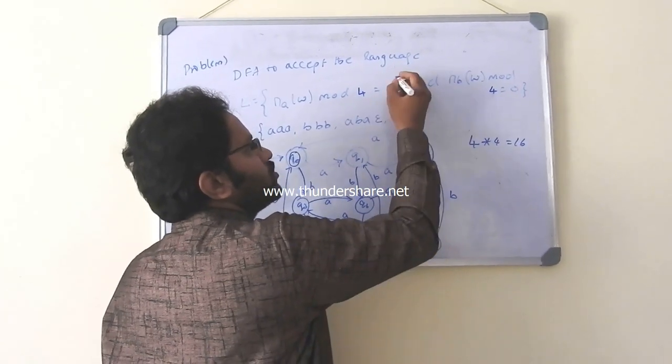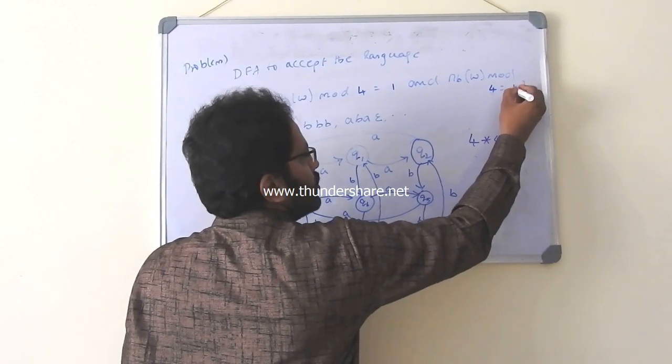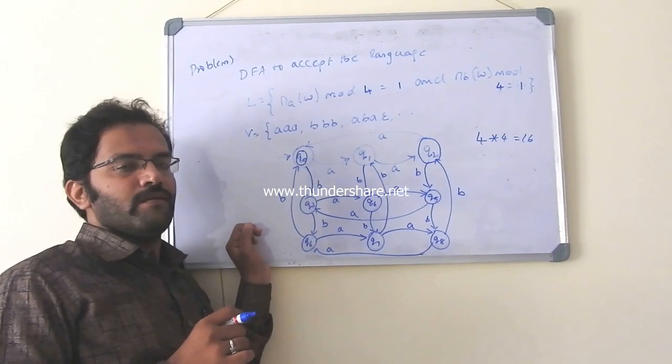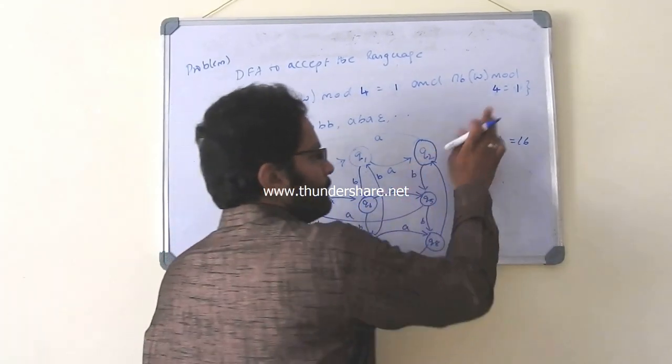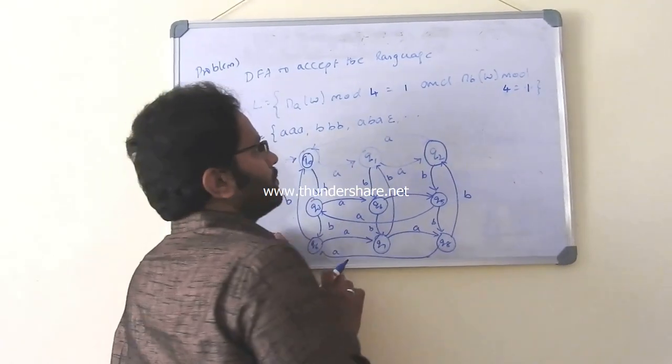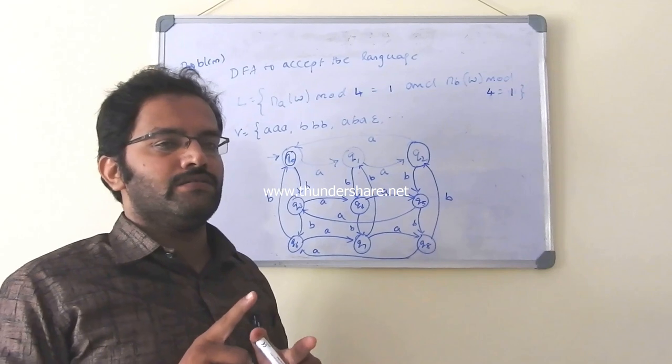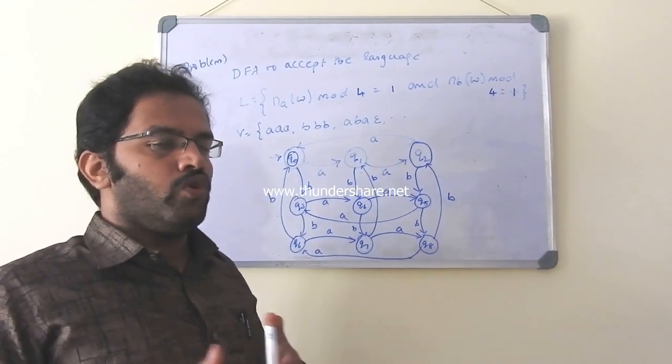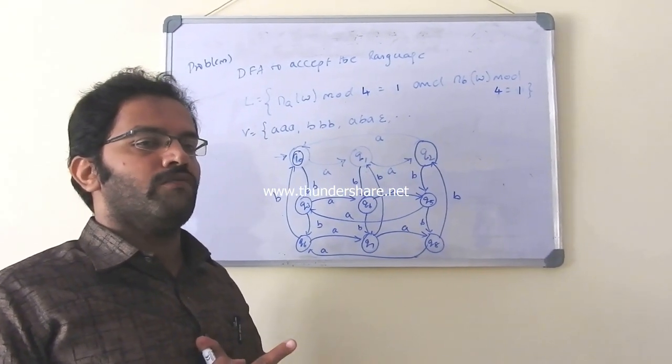But sometimes, this could be a problem. They may say number of symbols in W mod 4 is 1 and number of B's in W mod 4 is 1. Bit tricky, nothing to worry. What does it mean? It clearly says, if you count number of A's divided by 4, remainder should be 1. You know when do I get remainder as 1? When do I get remainder 1? When the number is 1.